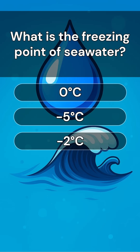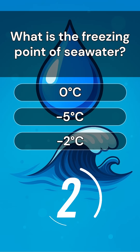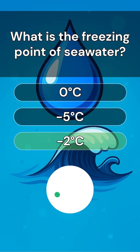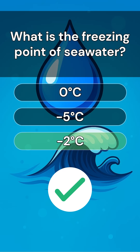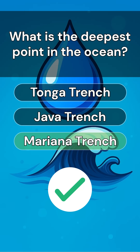What is the freezing point of seawater? Answer is minus 2 degrees Celsius. What is the deepest point in the ocean? Answer is the Mariana Trench.